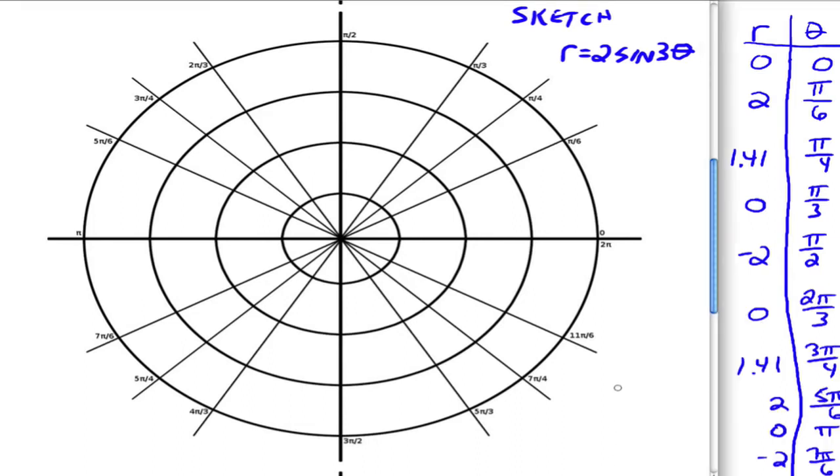Alright, so now let's go plot them. So 0, 0, we're at the origin, at the pole. And then at pi over 6, we're out at 2, so 1, 2. At pi over 4, we're out here at 1.4, roughly, somewhere like that. And then at pi over 3, we're back at the pole.